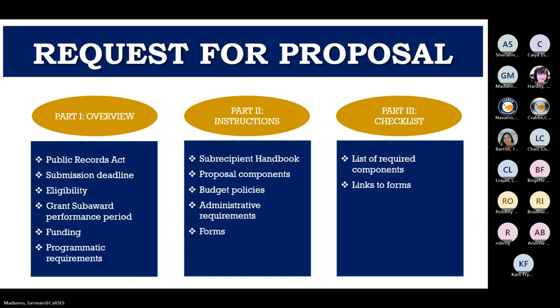The RFP has three parts. Part one explains what you have to do — the public records act, submission deadline, eligibility, grant sub-award performance period, funding, and programmatic requirements. Part two refers to policies and administrative requirements and includes references to the subrecipient handbook, required proposal components, policies concerning the budget, administrative requirements, and any required or additional forms.